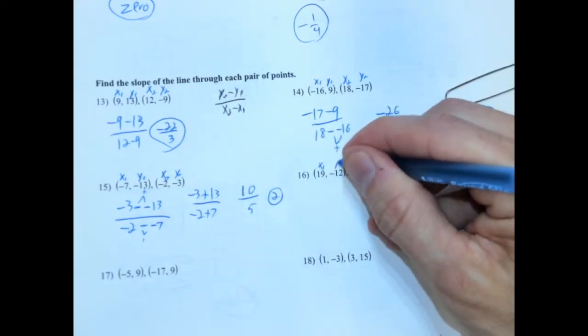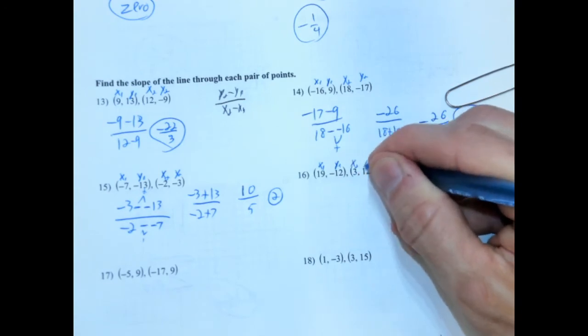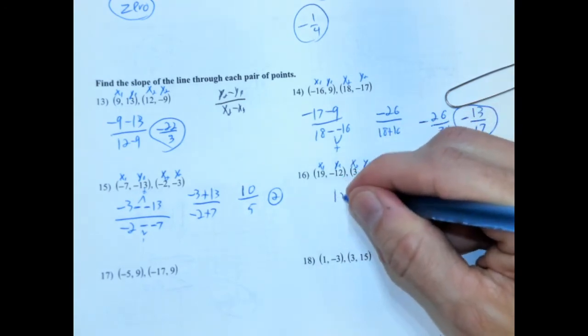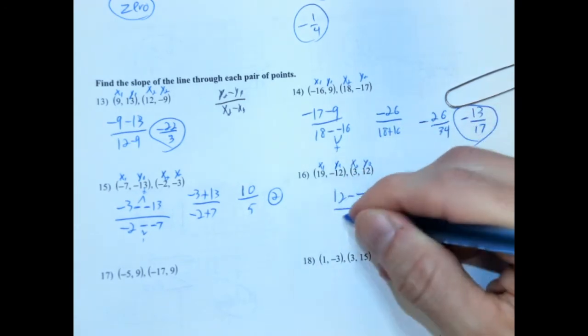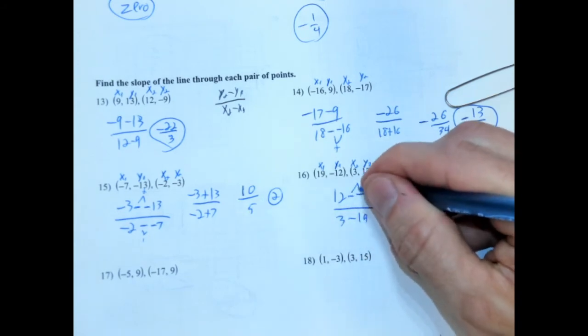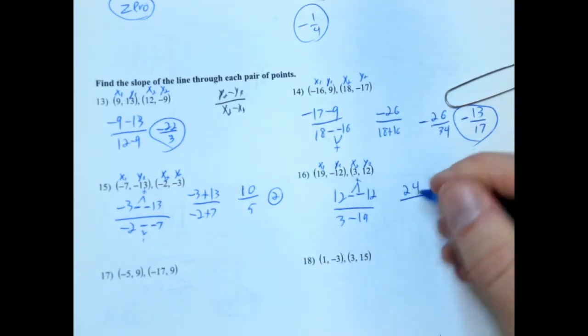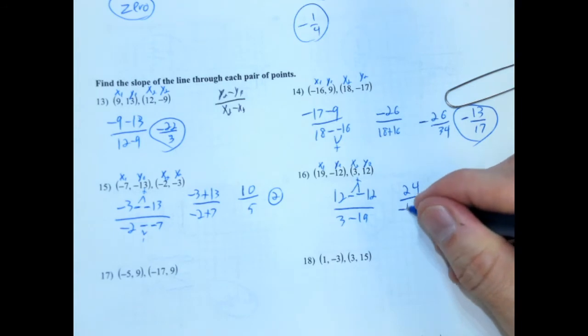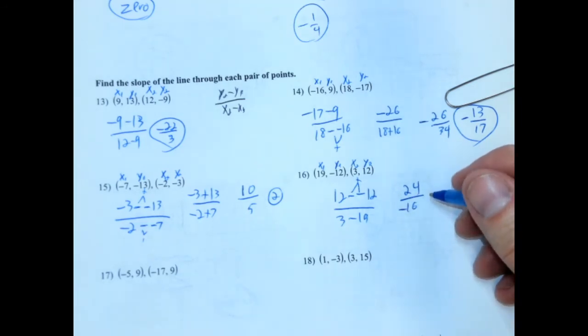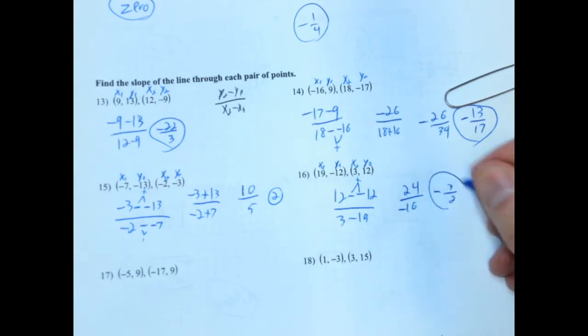x sub 1, y sub 1. x sub 2, y sub 2. So 12 minus negative 12. And then 3 minus 19. So double negatives become 24. And 3 minus 19 is going to be negative 16. We can definitely simplify this. They're both divisible by 8. So it would be 3 over 2. Negative 3 over 2.